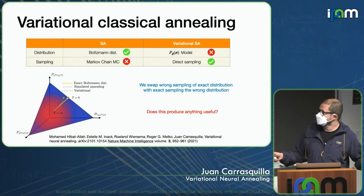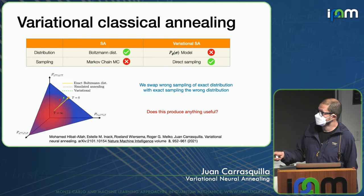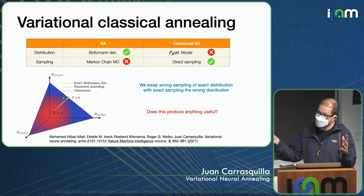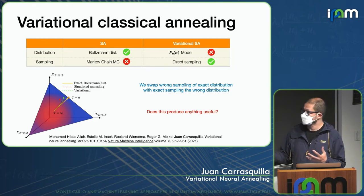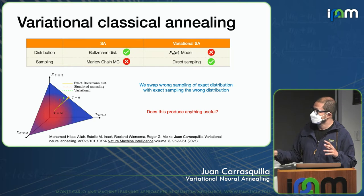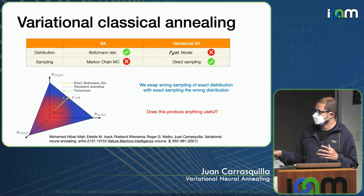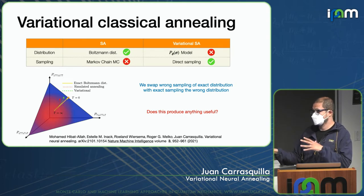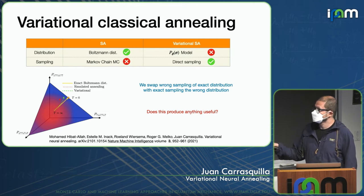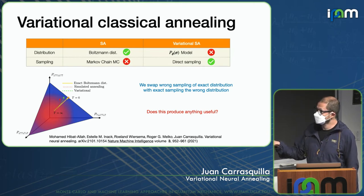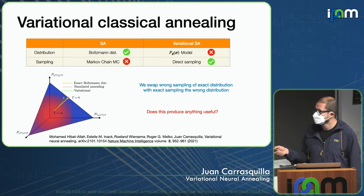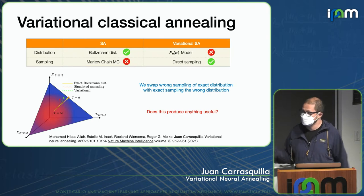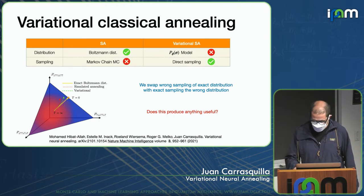To summarize: in simulated annealing, you have the exact Boltzmann distribution as target but Markov chain Monte Carlo can be slow. A pessimistic view of what we're doing is that we're swapping 'wrong sampling of the exact distribution' with 'exact sampling of the wrong distribution' — we sample a model for the Boltzmann distribution that is not exact but can be sampled very efficiently. The question is whether this produces anything useful.